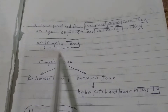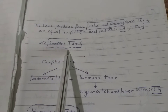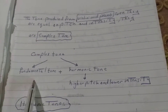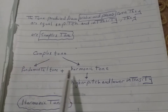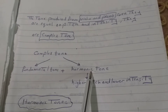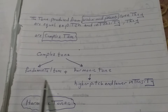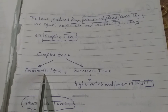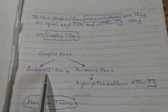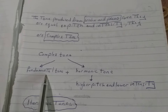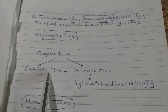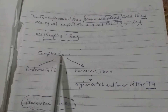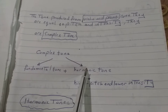What is the complex tune? A complex tune is a mix between the fundamental tune and the harmonic tune. Any sound makes vibration, so it contains a fundamental tune, and there are also harmonic tunes present.